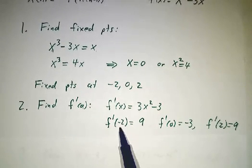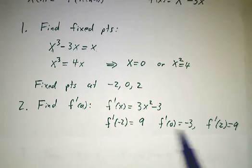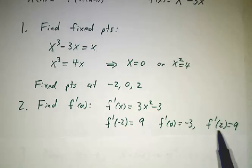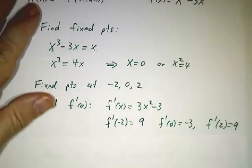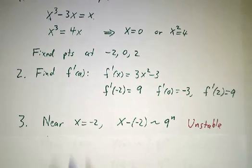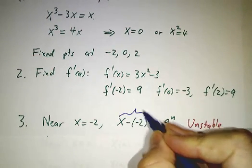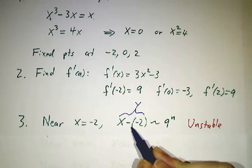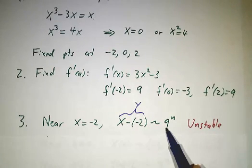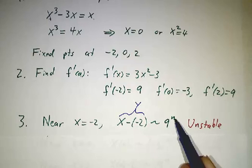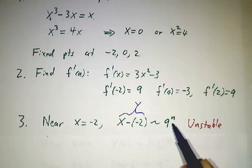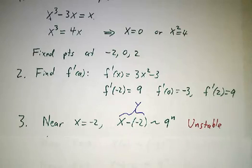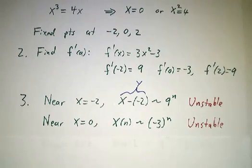And we evaluate the derivative at each of the fixed points. At the fixed point negative 2, we get 9. At 0, we get negative 3. At 2, we get 9. So if you start off near x equals negative 2, then y, which is x minus negative 2, grows like 9 to the n. Some constant times 9 to the n. That's very unstable. It's growing very quickly.